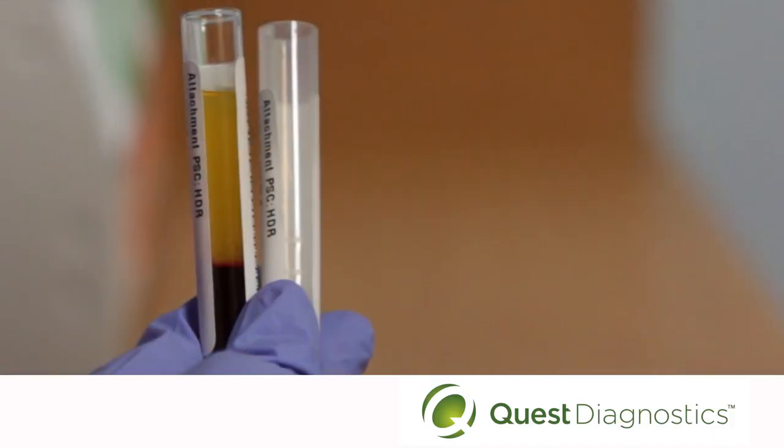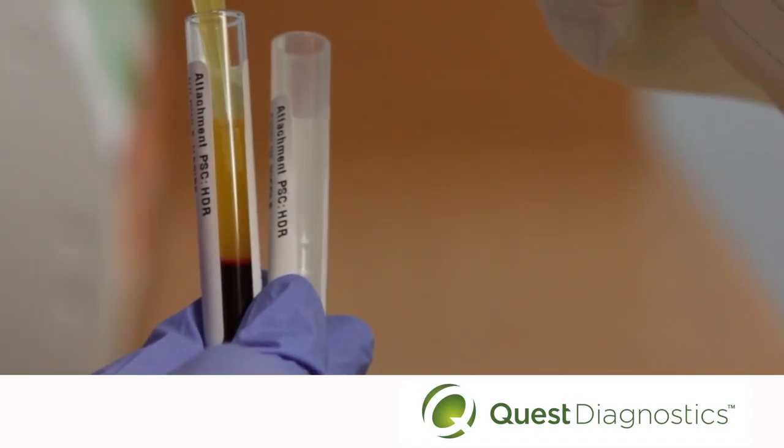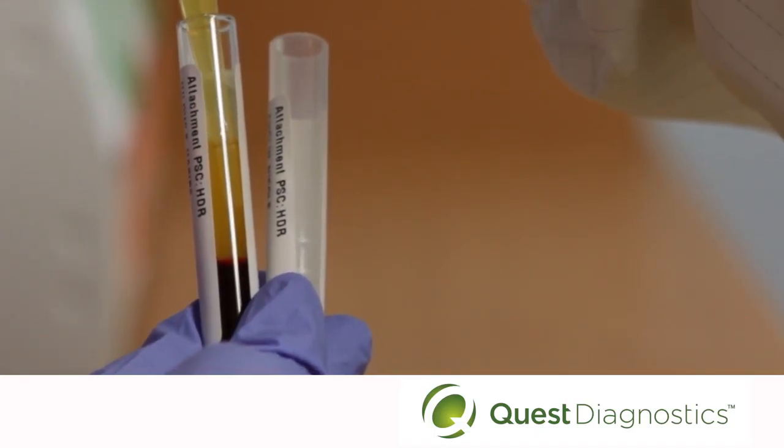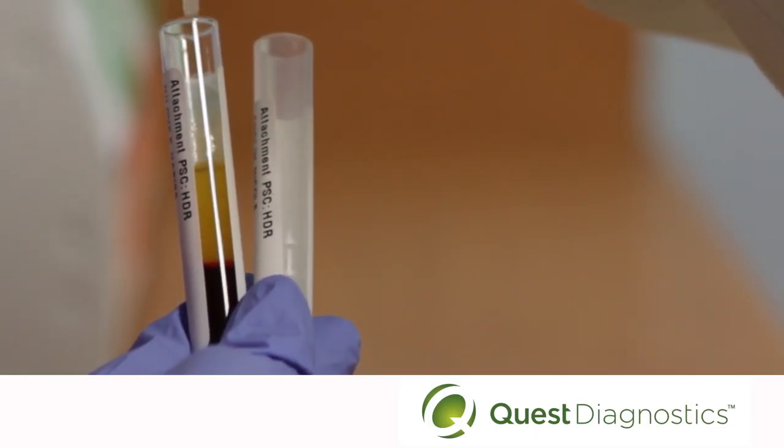To remove the plasma, start with the top and very gently draw the specimen up into the pipette as you move the pipette further down into the tube. Leave about one half milliliter of plasma.